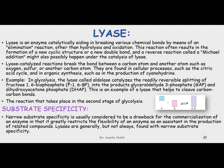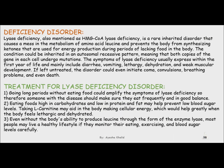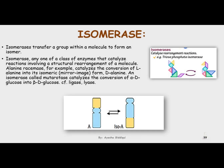The sixth class is ligases. These enzymes catalyze condensation reactions — the joining of two molecules forming carbon-oxygen, carbon-sulfur, carbon-nitrogen, or carbon-carbon bonds — and also release energy during this process. For example, acetyl-CoA in the presence of ATP is acted upon by acetyl-CoA carboxylase and converted into malonyl-CoA.